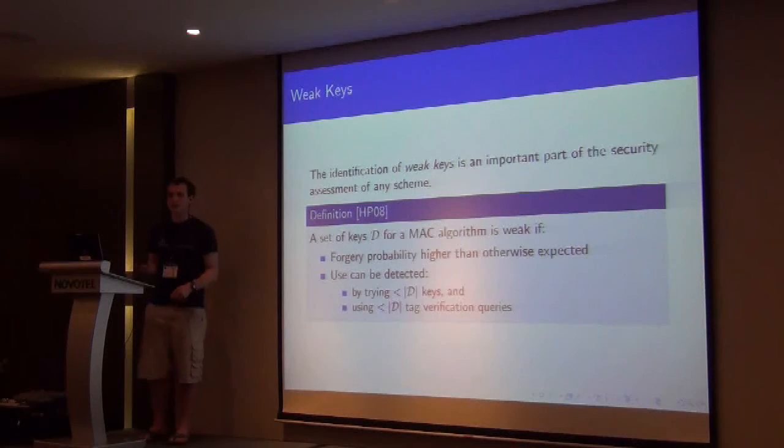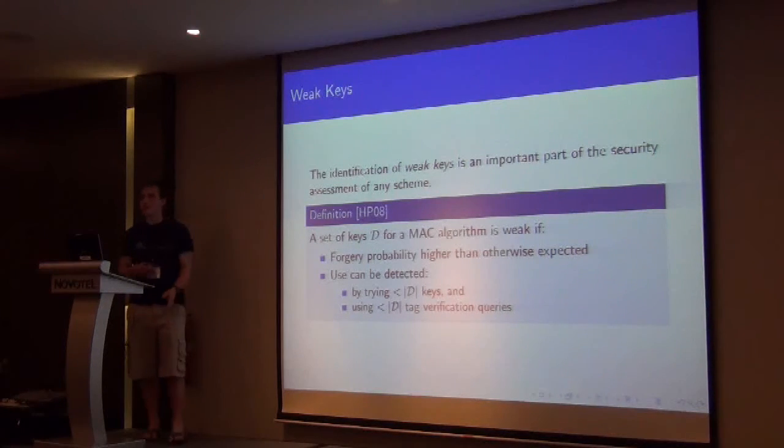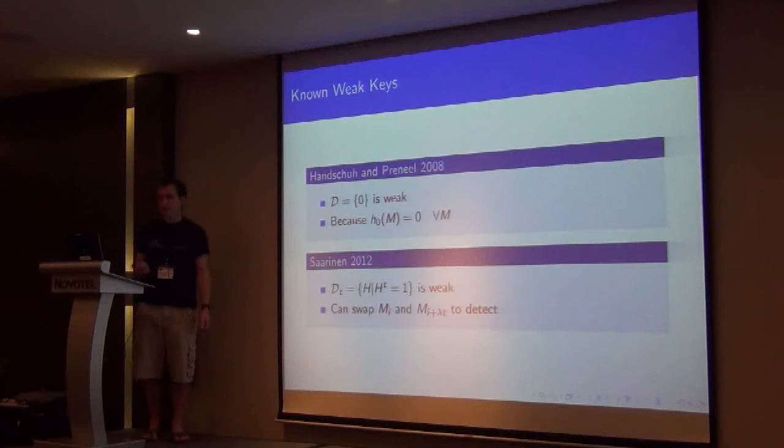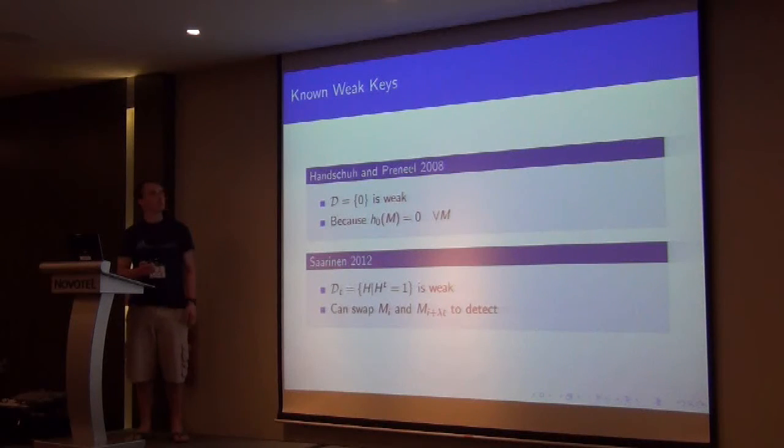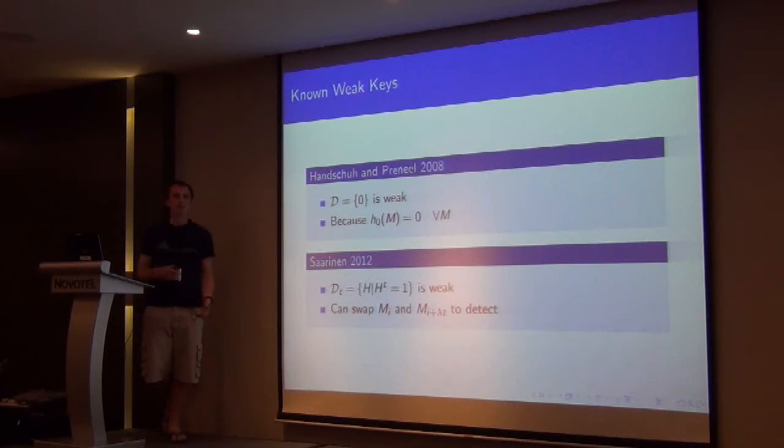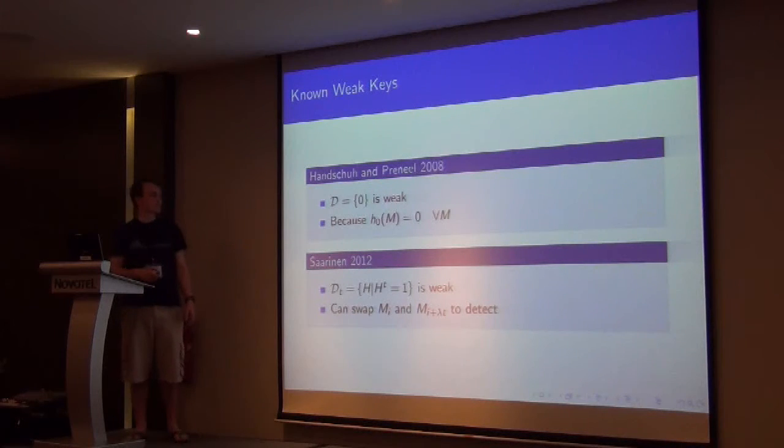If we use one of these keys. And we can detect whether one of those keys is being used. We can't just say, is it the first one, is it the second one, is it the third one? Our position is more than that. And we're allowed up to the size of the verification queries. So the weak key classes that are currently known is, if the key is zero, then the hash of the message never changes for whatever the message is. Because your polynomial is just m_1 times 0 plus m_2 times 0 plus m_3 times 0.